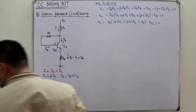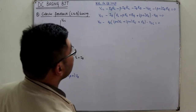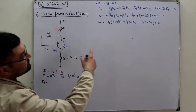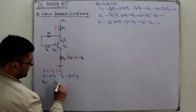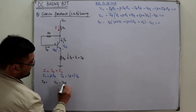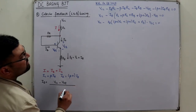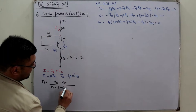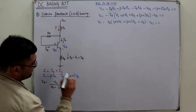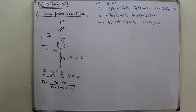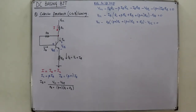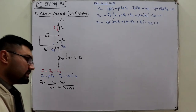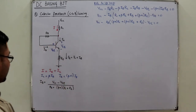From this, IB comes out to be: IB = (VCC − VBE) / [RB + (β+1)·(RC + RE)]. Once you have IB, you can find IC = β·IB, assuming the transistor is operating in the active region.